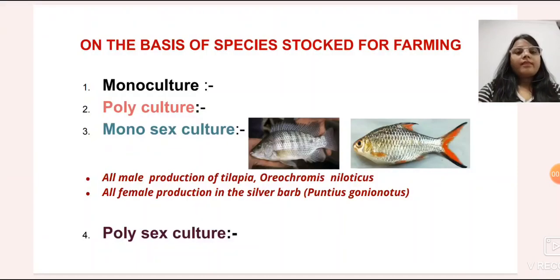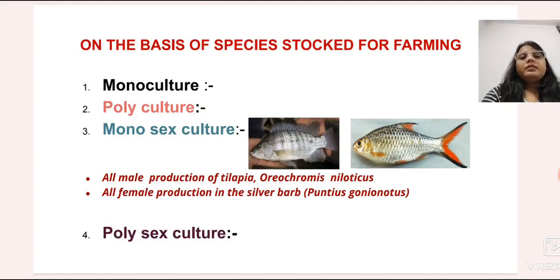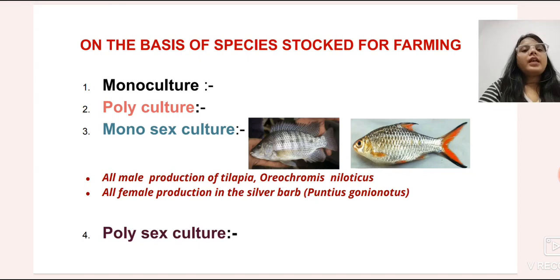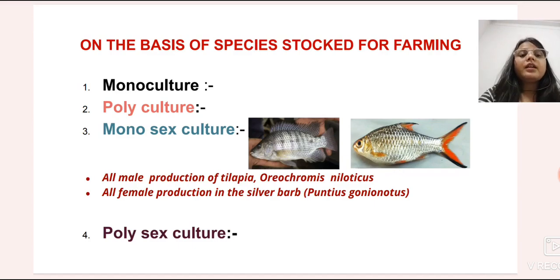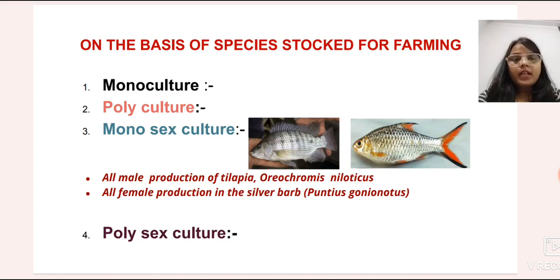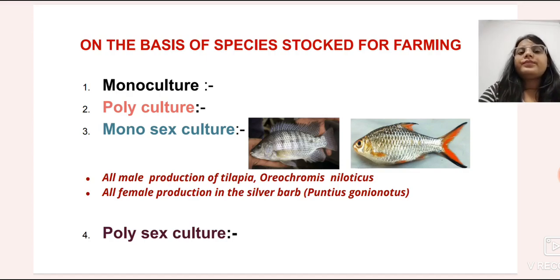Now, fish culture on the basis of species: there are four types of culture systems — monoculture, polyculture, monosex culture, and polysex culture. Monoculture means only one fish species is reared in a culture medium or culture system. For example, only tilapia culture, only catfish culture, only carp culture, or only shrimp culture — these are examples of monoculture.